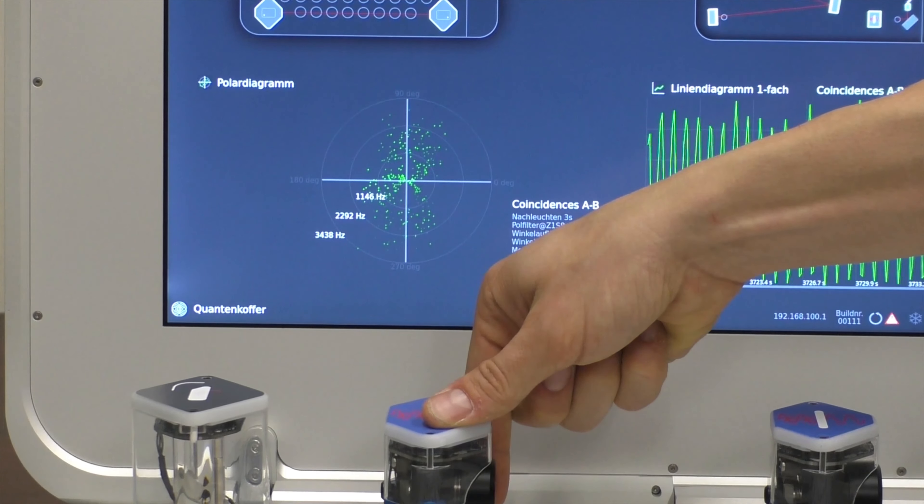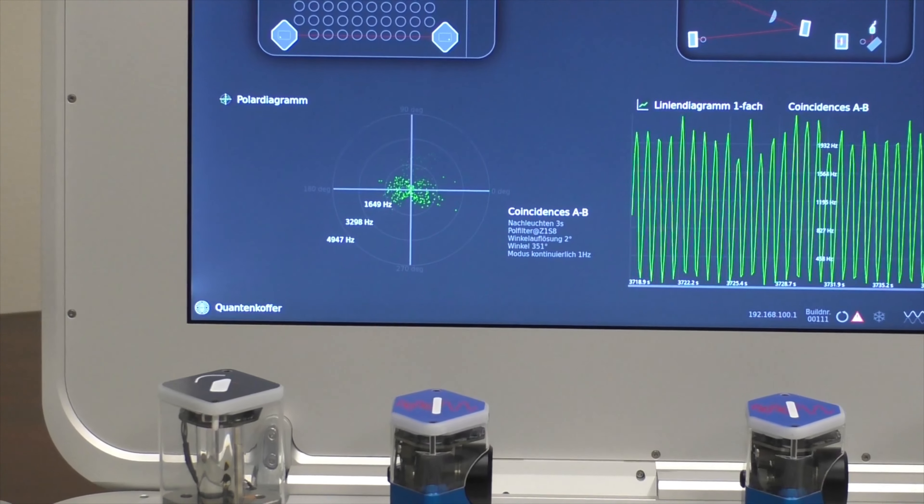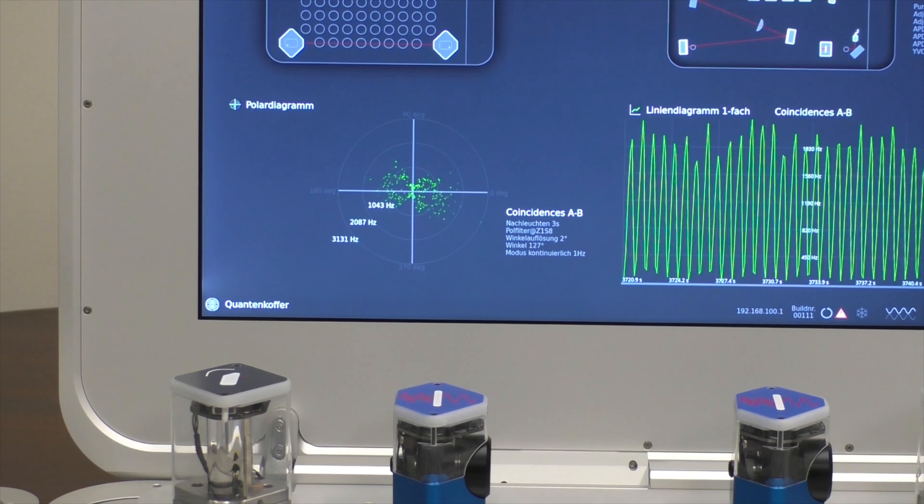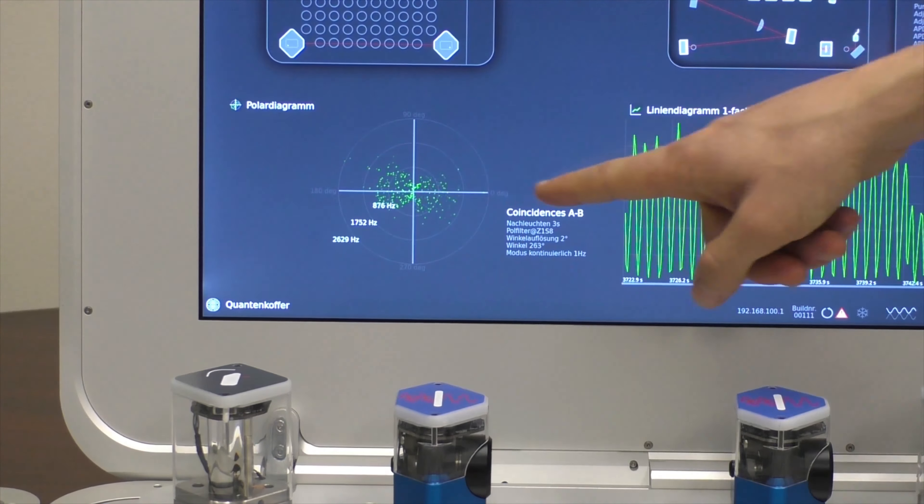So I can now show you what happens if I turn this. I can turn this by 90 degrees for example and we'll get the figure of 8 in the other direction.